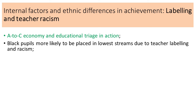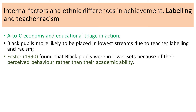Black pupils are more likely to be placed in the lowest streams due to teacher labeling and racism. Secondary schools stream pupils into top and bottom classes based on perceived ability. Foster found that black pupils were placed in lower sets because of their perceived behavior rather than their academic ability - on a number of occasions, black pupils were doing as well as or better than some white British majority pupils and yet were being placed in lower streams.